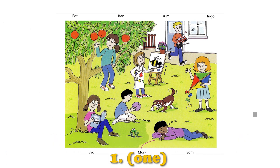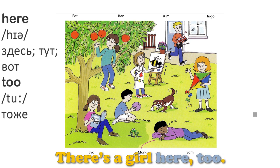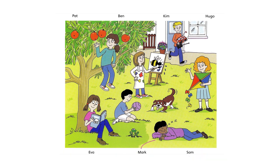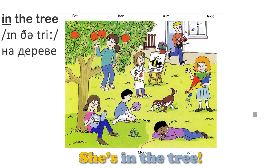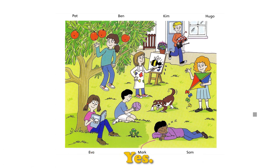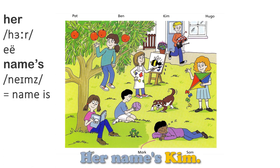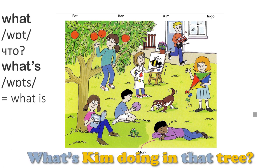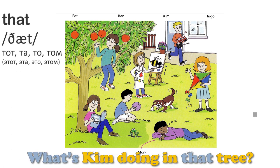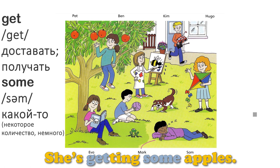One. There's a girl here, too. She's in the tree. Yes, she loves trees. Her name's Kim. What's Kim doing in that tree? She's getting some apples.